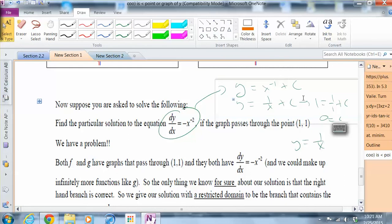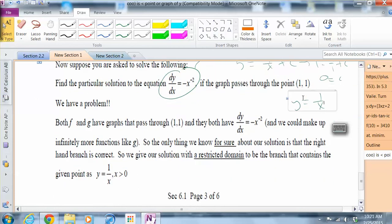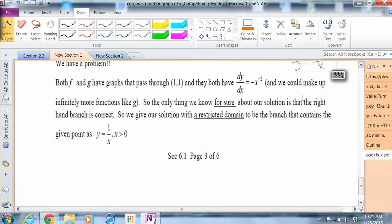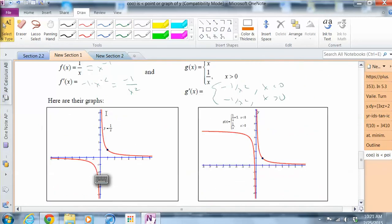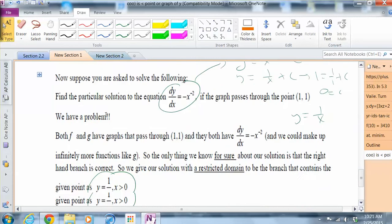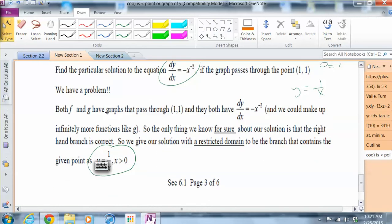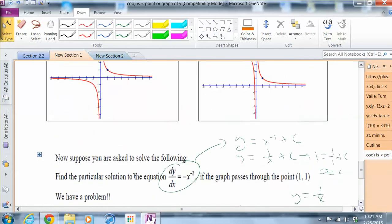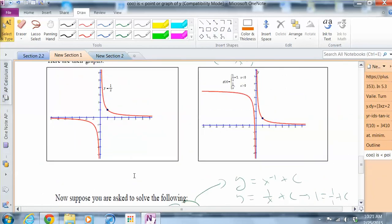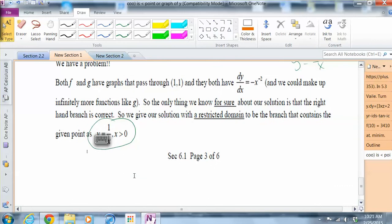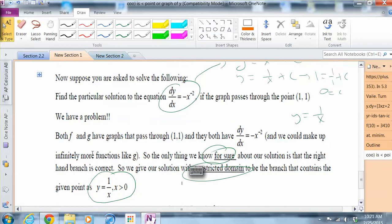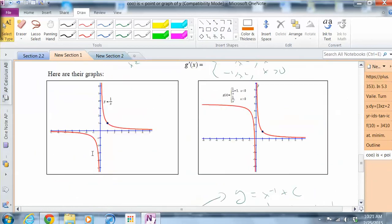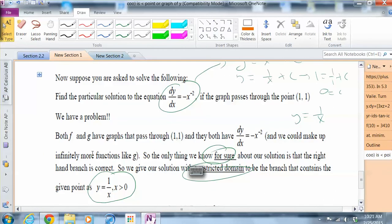So in this case, the only thing that we can really say with confidence is that our answer to both these differential equations, if dy/dx is negative x to the negative two power, there's just going to be y equals one over x when x is greater than zero. Because we don't know how the left branch is going to look. The left branch could be totally different. So that's the only thing we can really say with certainty with a restricted domain, is that y equals one over x when x is greater than zero. Because we don't know how the left side of this graph is going to look. So we'll go ahead and stop there.